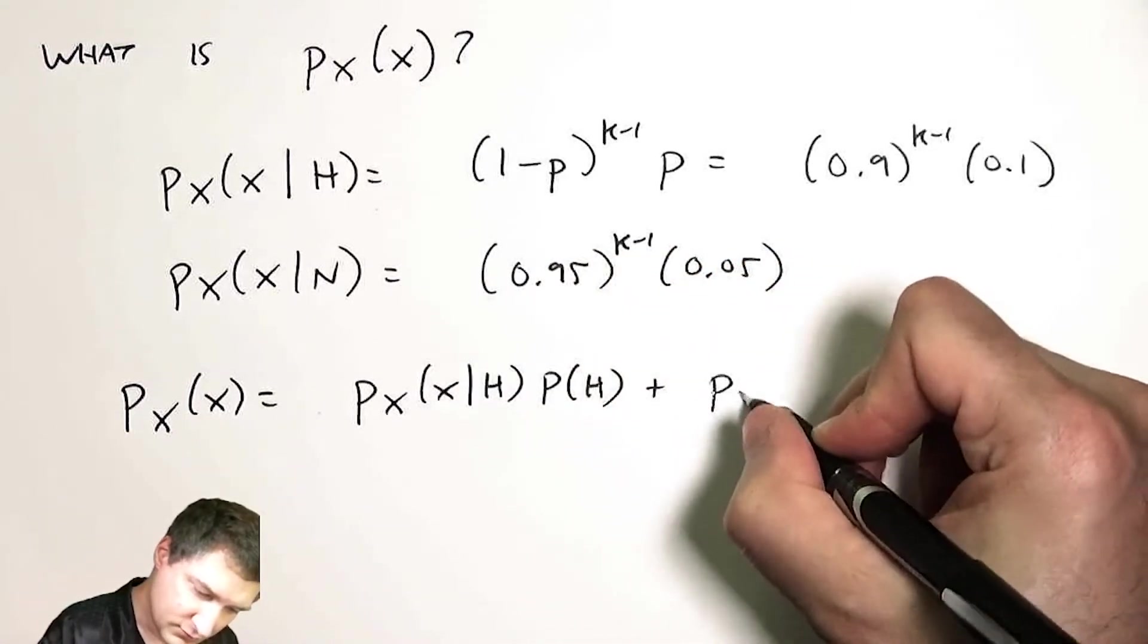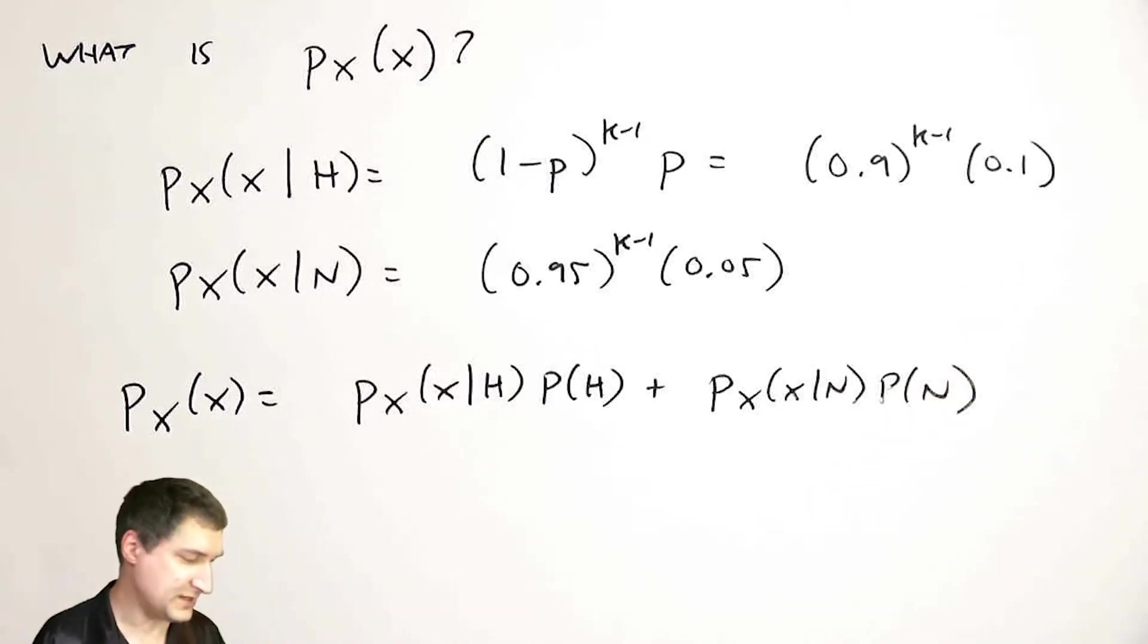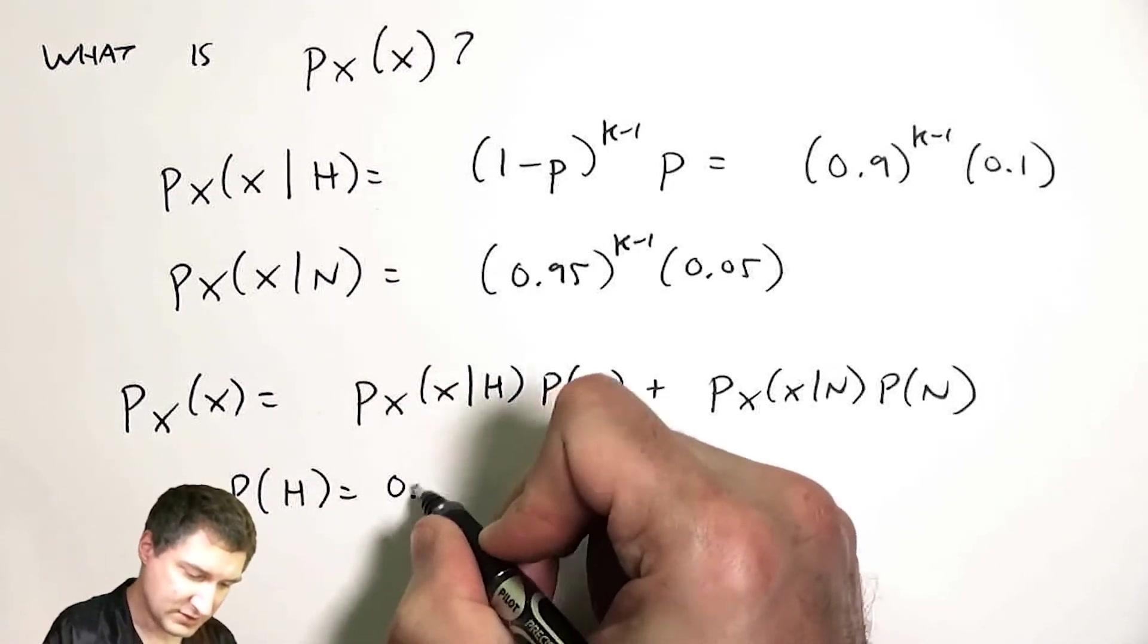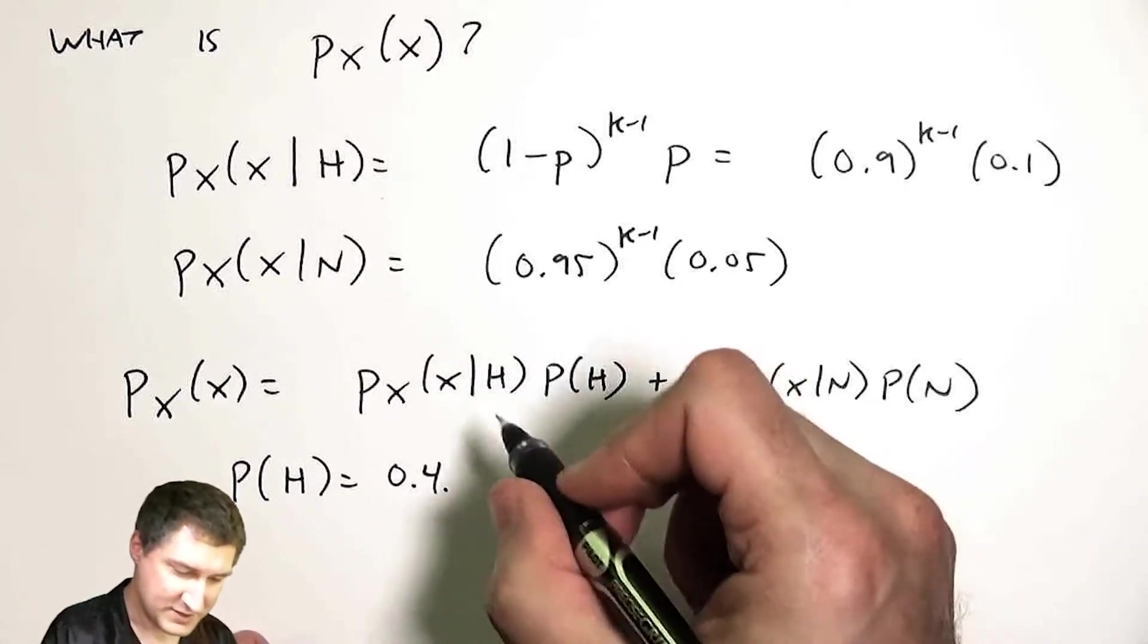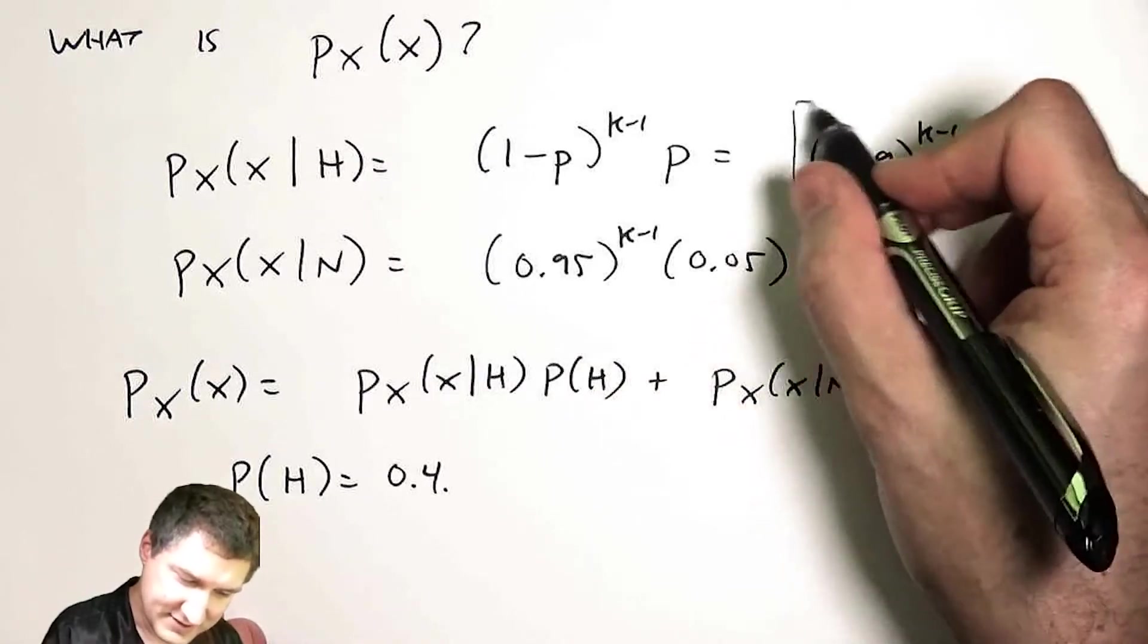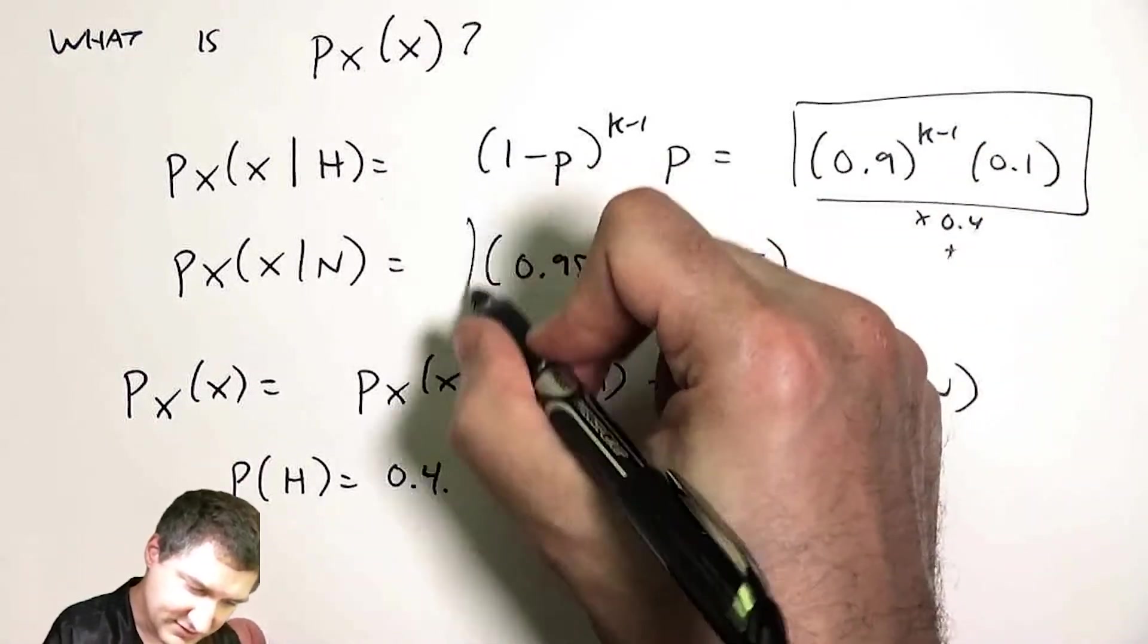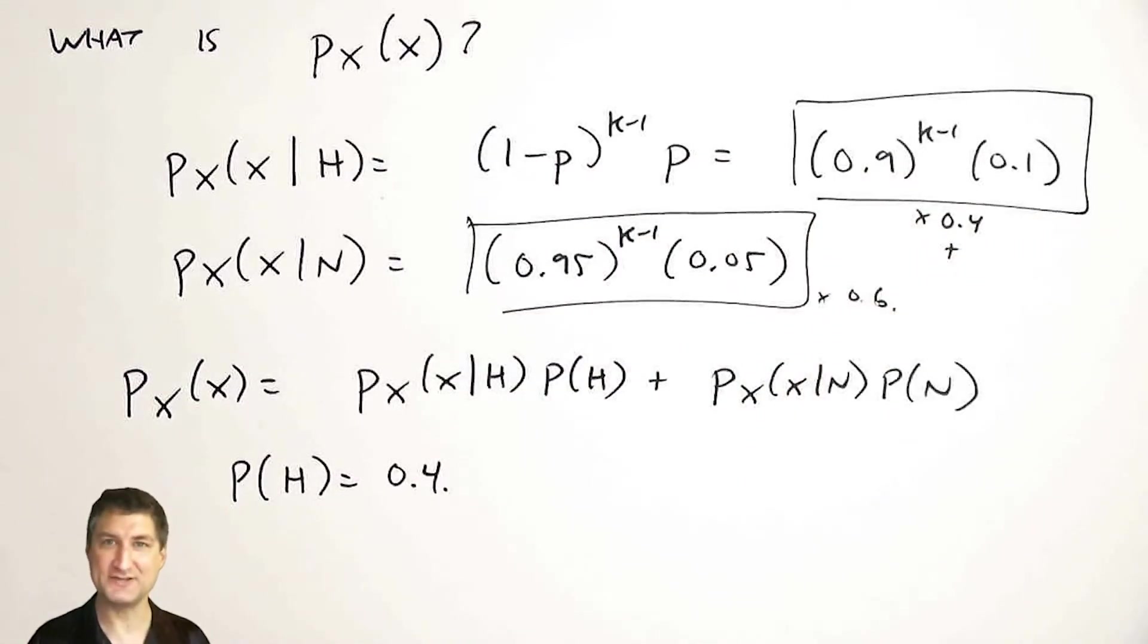And so the overall PMF is basically the weighted sum of these two conditional PMFs. And I guess I didn't tell you what the prevalence in the population was. So let's suppose that the prevalence of high blood pressure in the population was 40%. So then my overall PMF would be this thing times 0.4 plus this thing times 0.6. Kind of a composite PMF, the weighted sum of two PMFs.